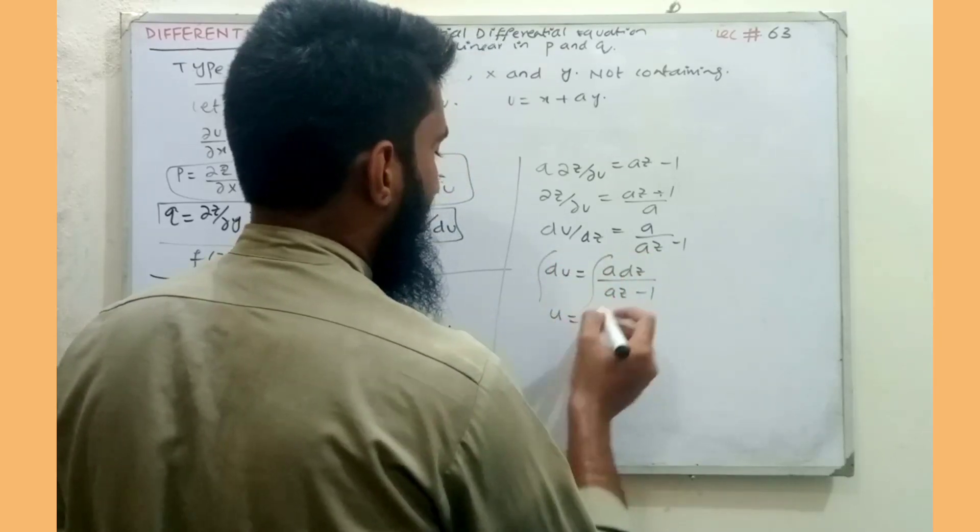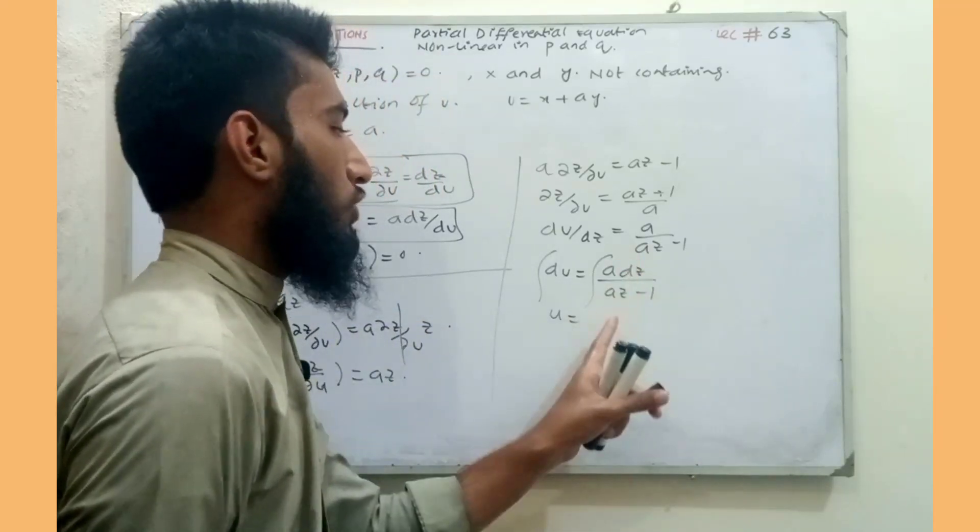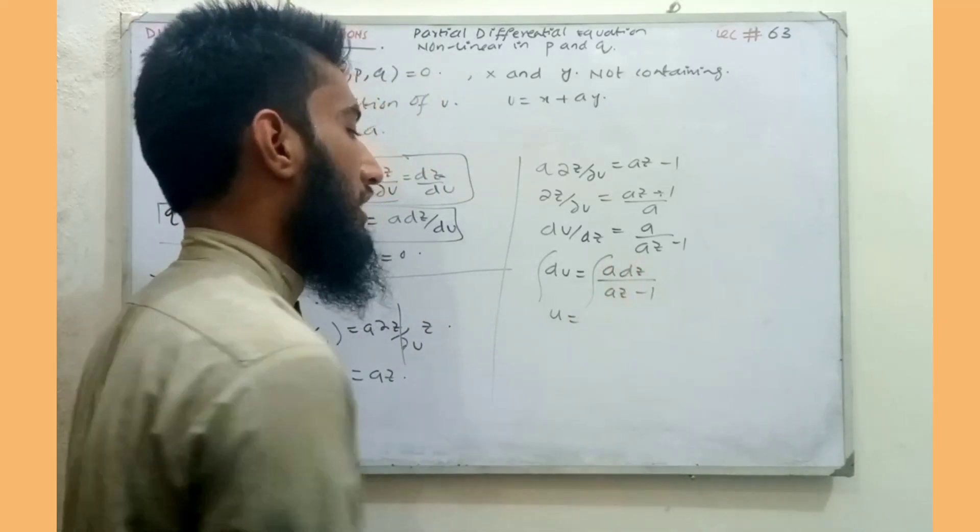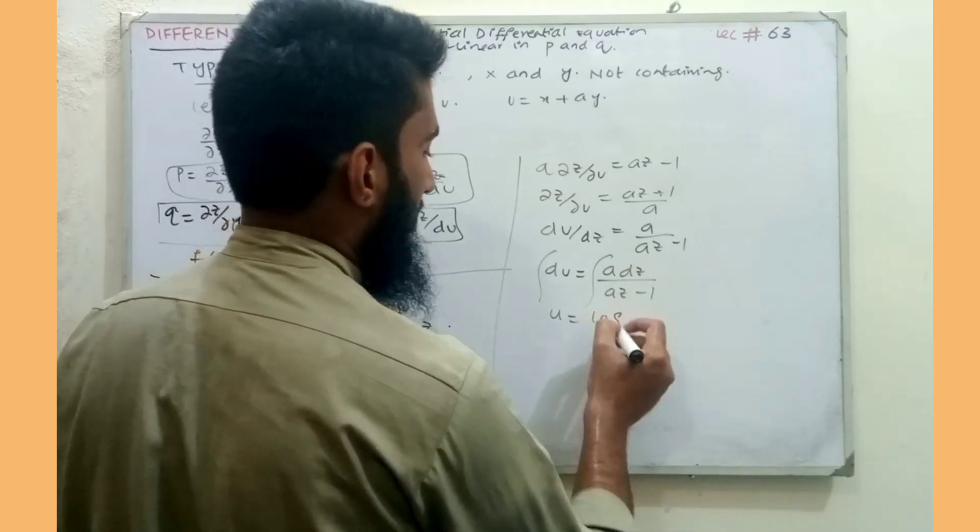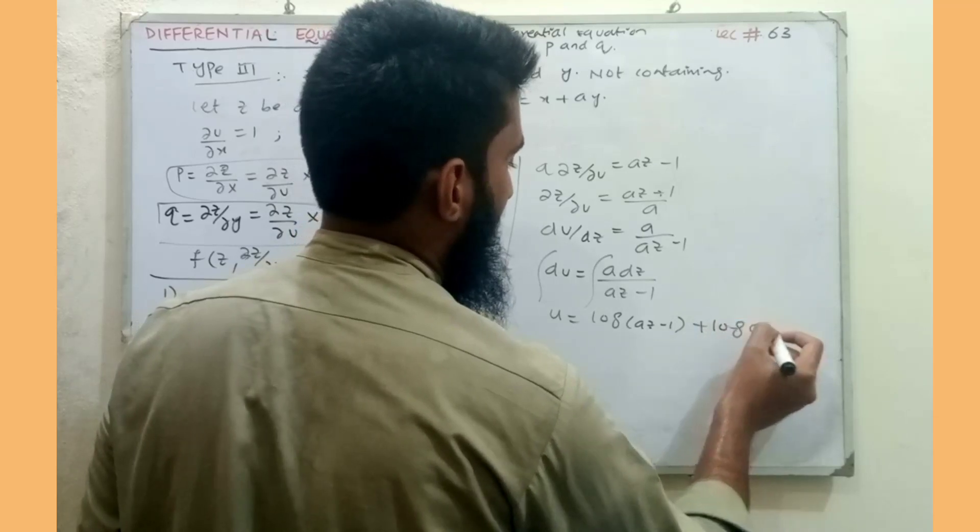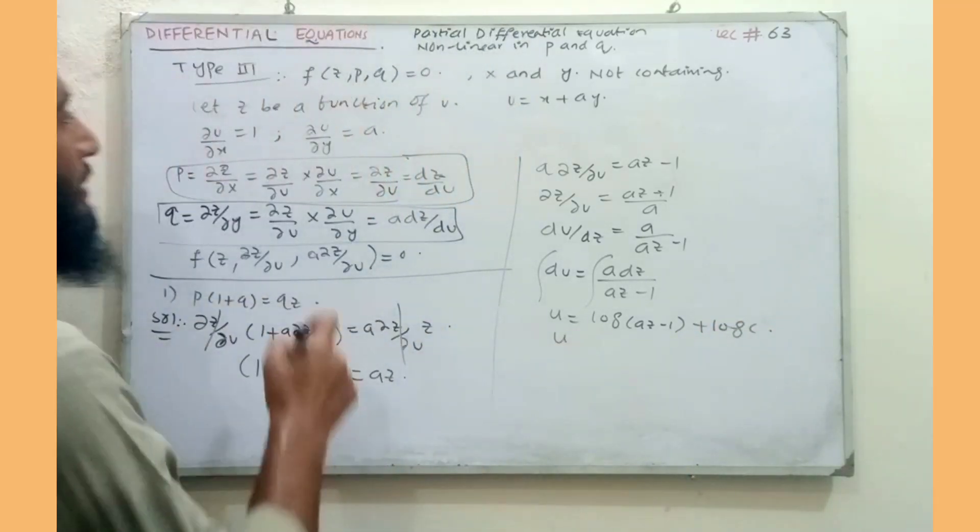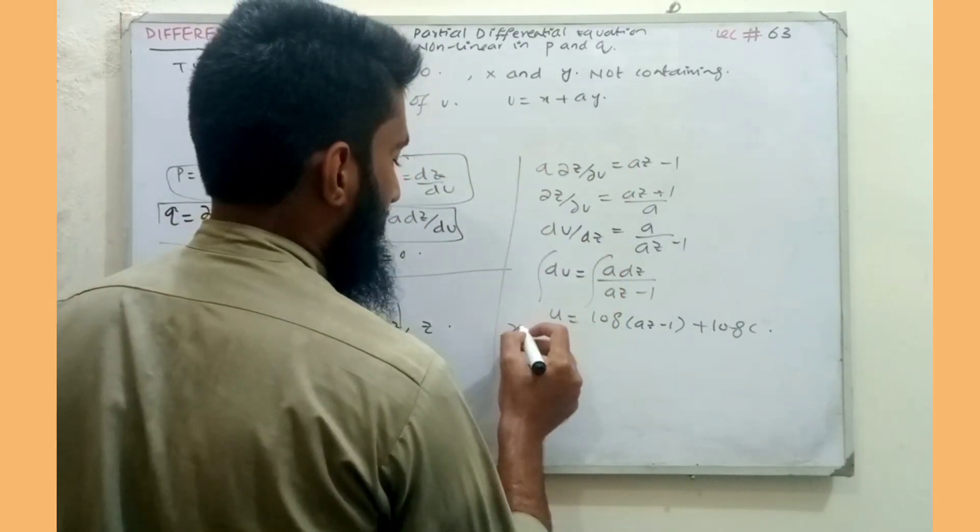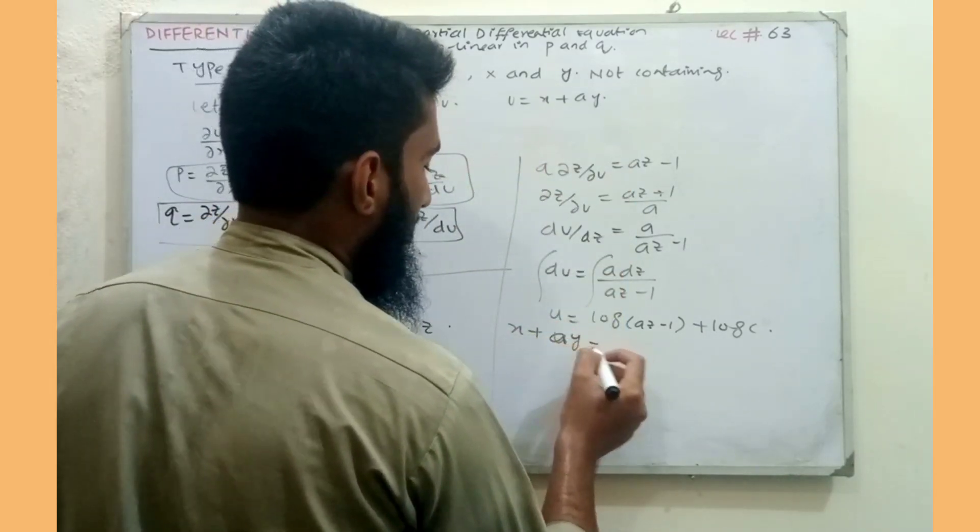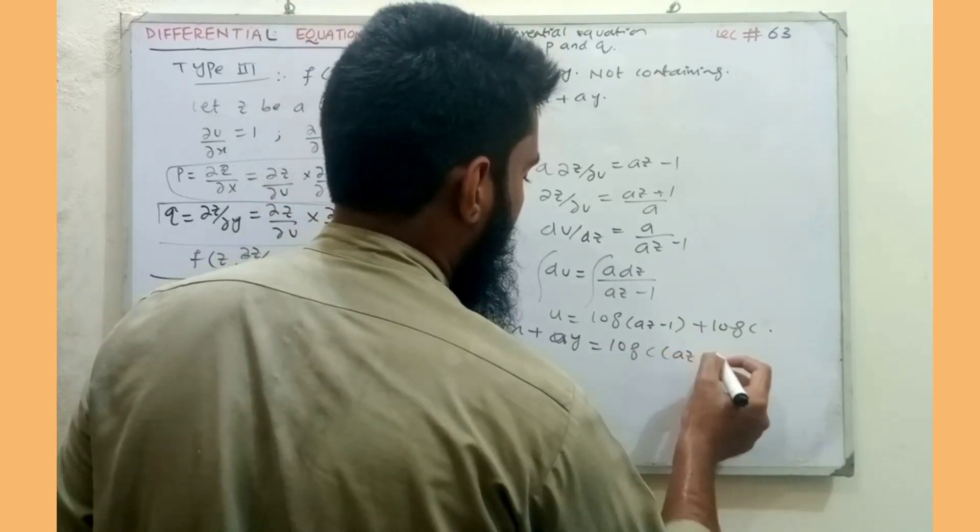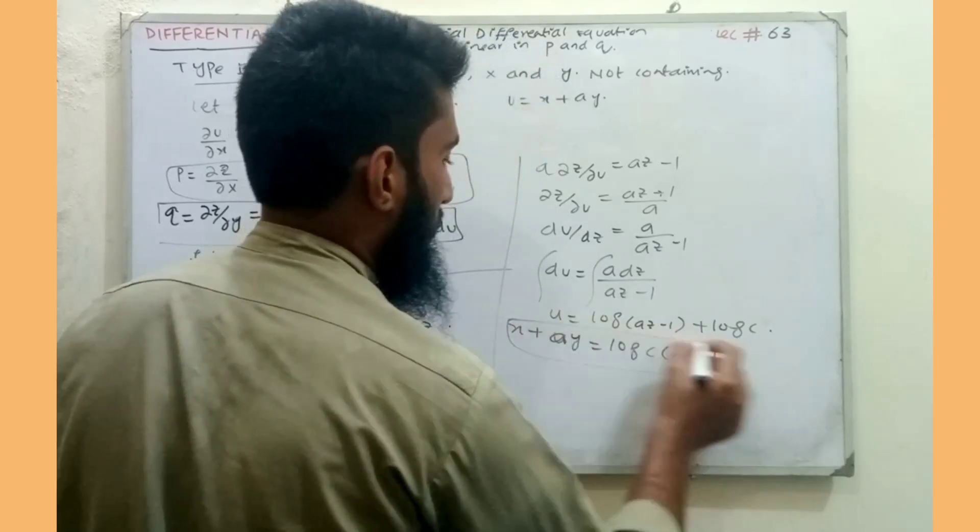The integration of du gives u. On the right side, the derivative of az minus one with respect to z is a. So the integration becomes a upon a minus one times log of az minus one plus constant of integration. Since u equals x plus ay, we have x plus ay equals a upon a minus one log times c times az minus one.